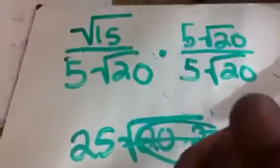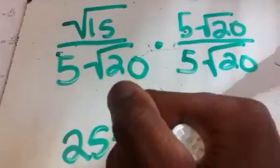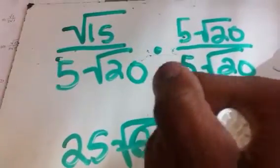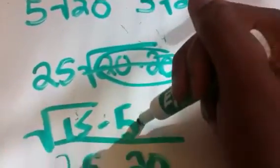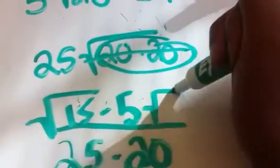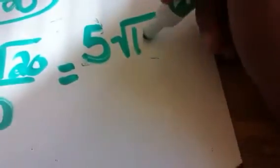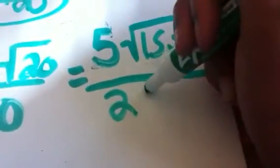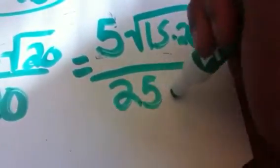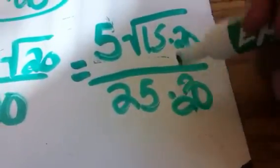And then in our numerator, we're going to have the square root of 15 times 5 times the square root of 20. So on the outside it'll be 5 times 1, which is 5. And on the inside it'll be the square root of 15 times 20, all over 25 times 20.